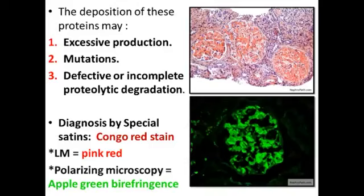قلنا ممكن يكون نتيجة mutations اللي صارت - فهاي الـ mutation رح تسبب production of abnormal proteins لكن هما normal amount. يعني النقطة الأولى قلنا هي normal proteins لكن abnormal amount (كميات)، هاي النقطة الثانية الـ mutation - لا رح يكون الكميات طبيعية لكن هو المطبيعي. بالنتيجة رح يصر accumulation. ثالث نقطة ممكن يكون نتيجة defect بالـ proteolytic degradation - ما يقدر الجسم يسوي proteolytic degradation فرح يكون either incomplete or defective وهذا النتيجة نفسها - accumulation of this amyloid protein.